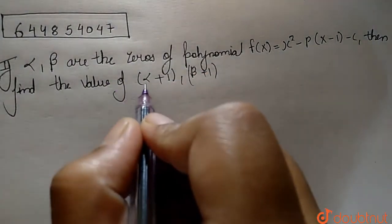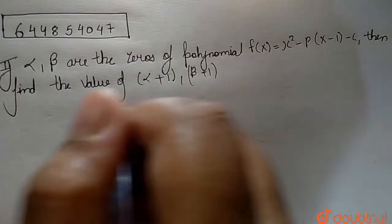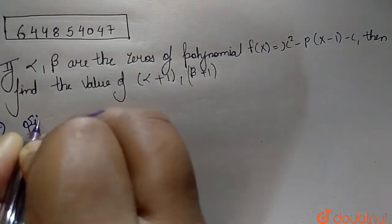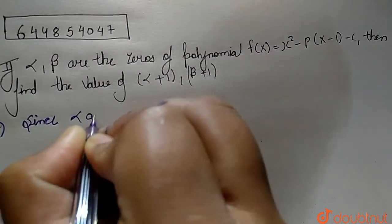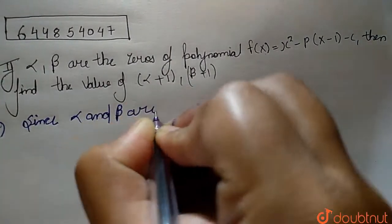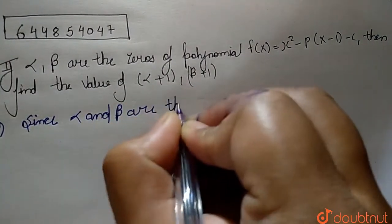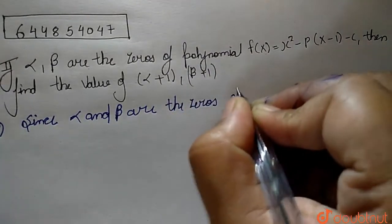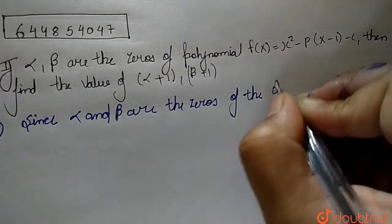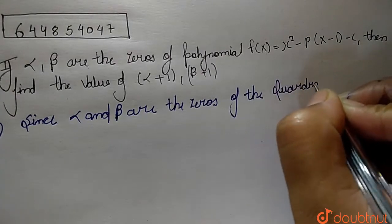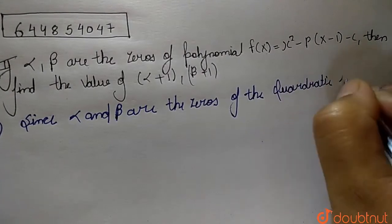We have to find out the value of (alpha + 1) and (beta + 1). Since alpha and beta are the zeros of the quadratic polynomial.